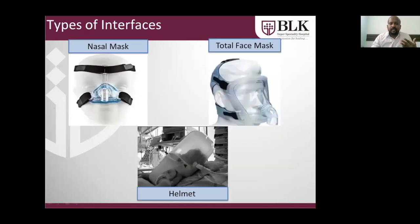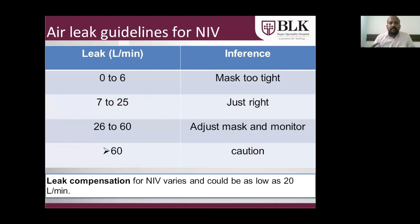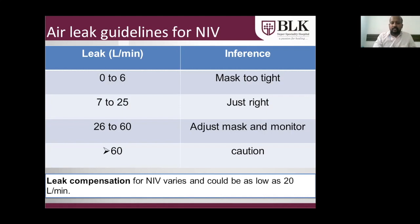Different interfaces can be used, including nasal masks — which have a problem with mouth leakage and are mainly used for chronic conditions like OSA — as well as total face masks and helmets. Regarding acceptable leak levels: a leak of 0 to 6 means the mask is too tightly fixed, which is not desired. A leak between 7 to 25 indicates a proper fit. A leak above 25 means the mask needs adjustment and the situation must be addressed cautiously. Most NIV machines have built-in leak compensation as low as 20 liters per minute.